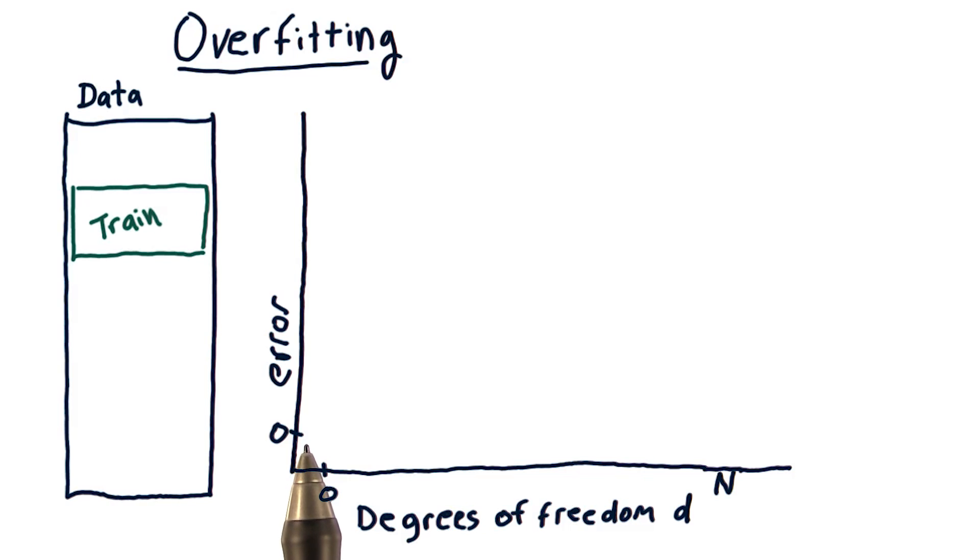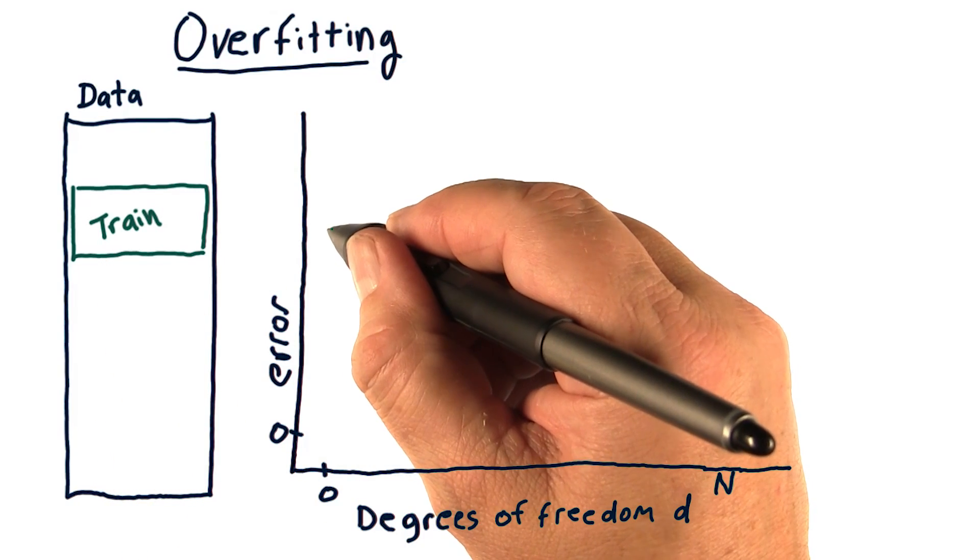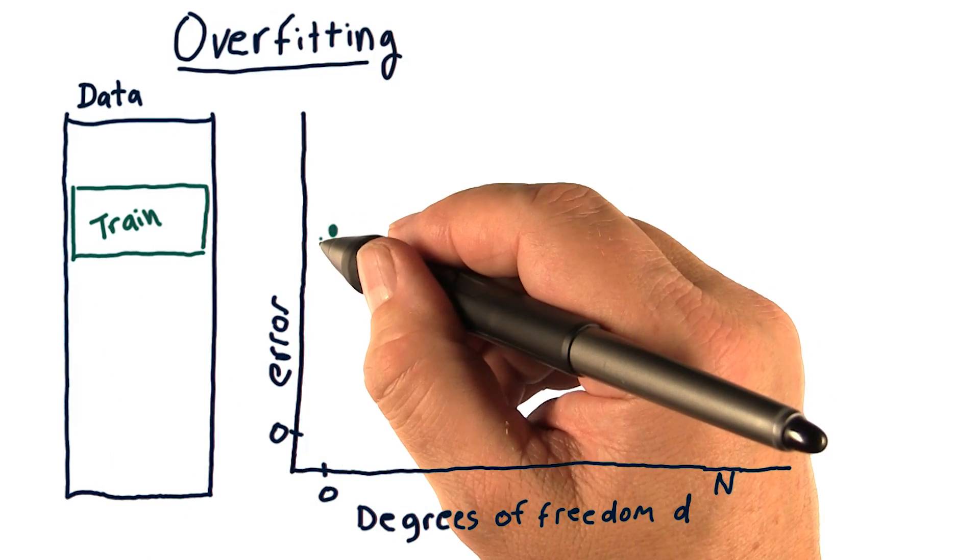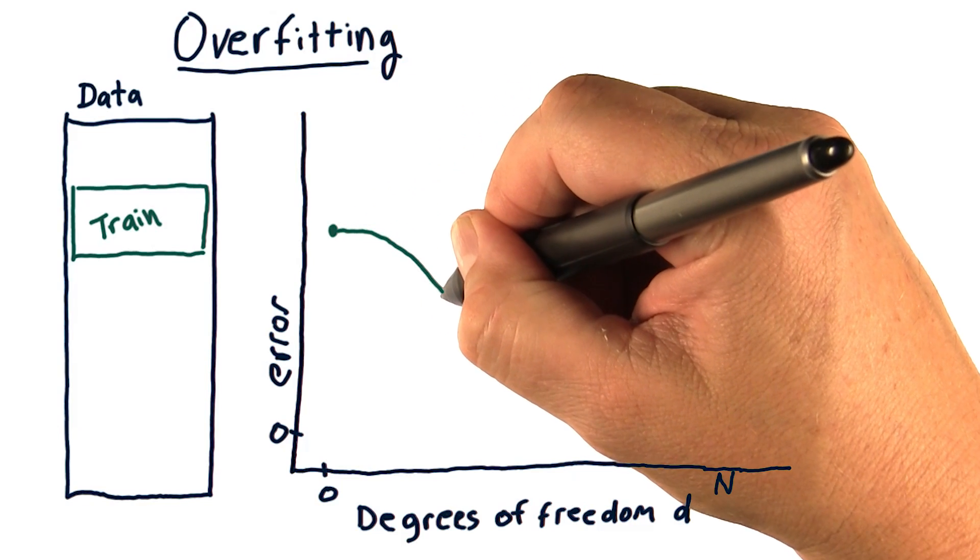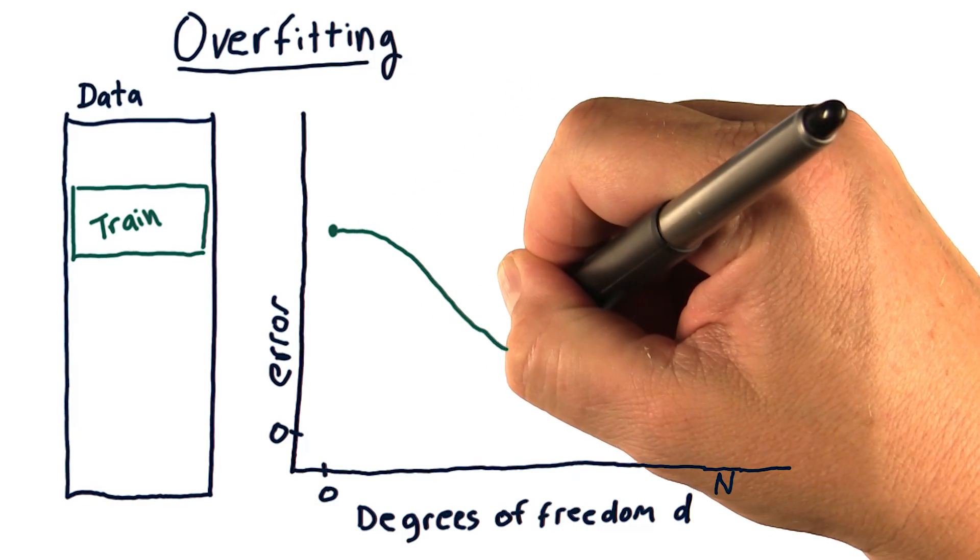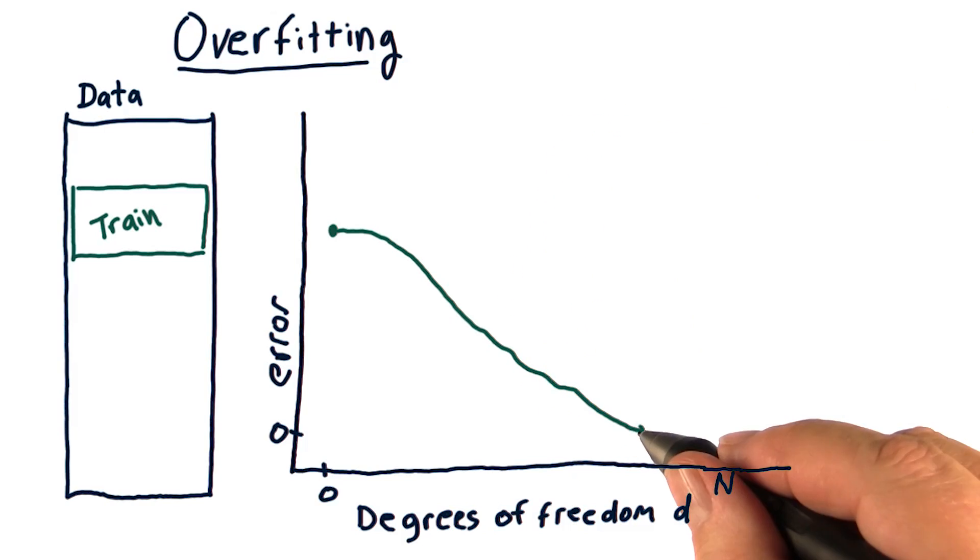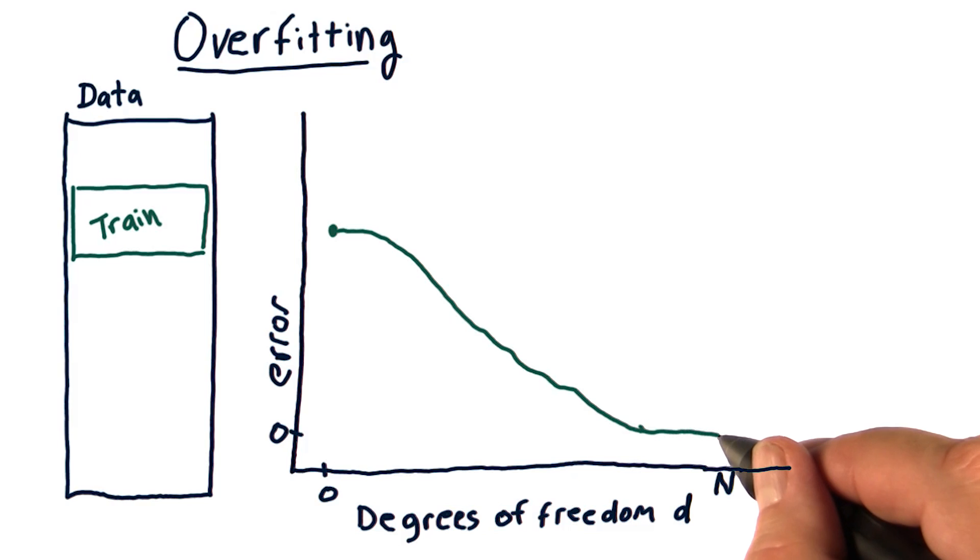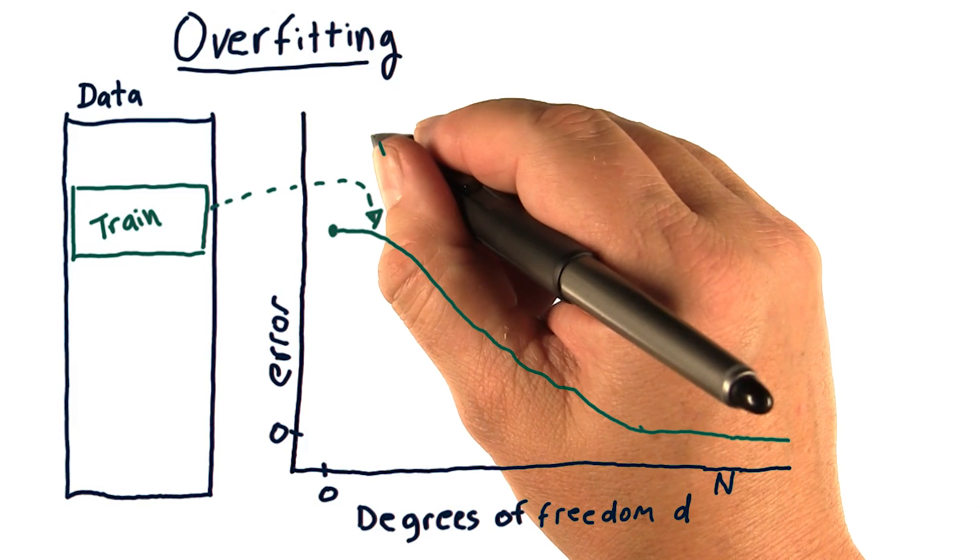So let's measure error as we increase d on our training set. So when d is smallest, our error is greatest. And as we increase d, our error drops and drops and drops. In other words, we're fitting the data in sample better and better. When finally we get to n, where we have as many parameters in our model as we do have items in our data set, our error gets all the way down to zero. This is in sample error.